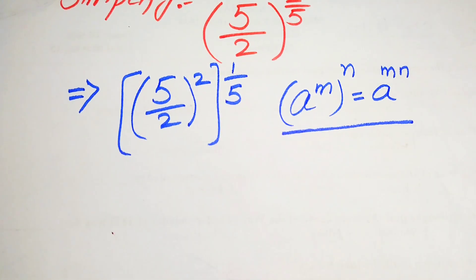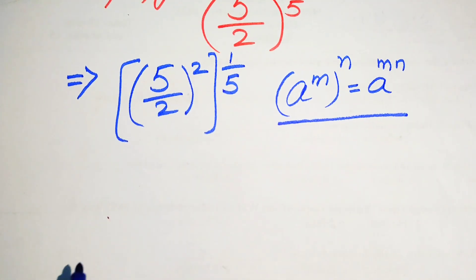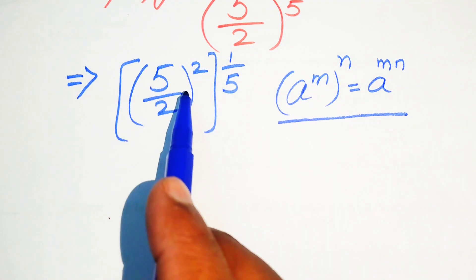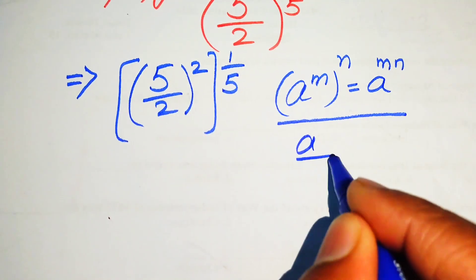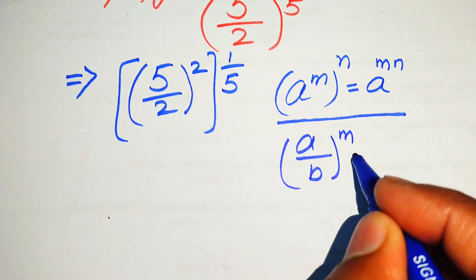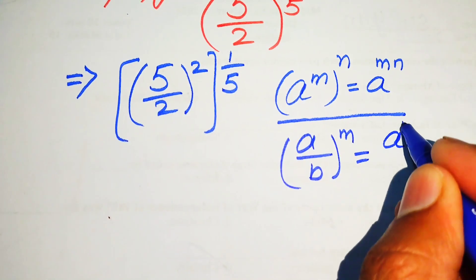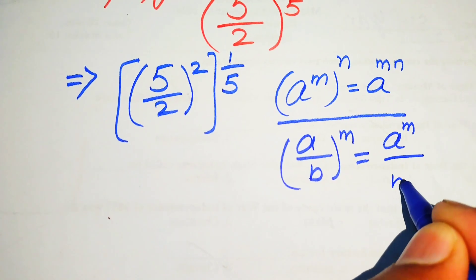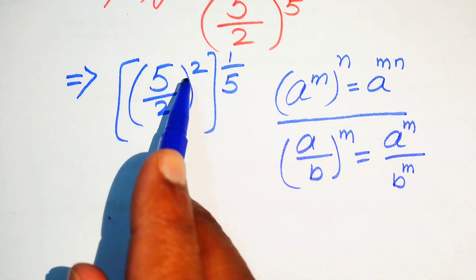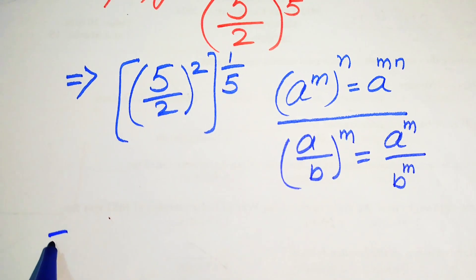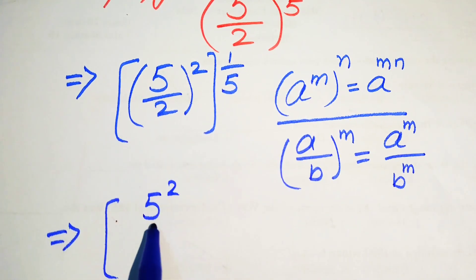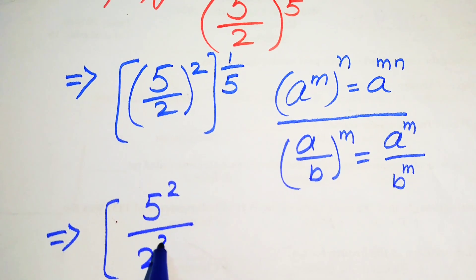Now we have another exponential law. We have (5/2) and its whole exponent is 2. We apply the law: (a/b) to the power of m equals a to the power of m divided by b to the power of m. So we separate the 2 on both terms.